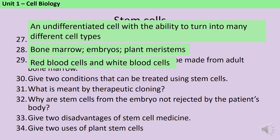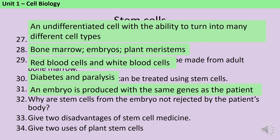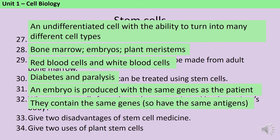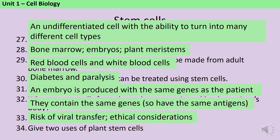Diabetes and paralysis can both be treated using stem cells. In therapeutic cloning, an embryo is produced that has the same genes as the patient. This won't be rejected because it contains the same genes, so the cells have the same antigens on their surface, and so the cells aren't identified by the immune system as being pathogens. Risks of this process include the risk of viral transfer and also some ethical considerations. Plant stem cells can be used to conserve rare species or to produce clones of plants for agriculture.